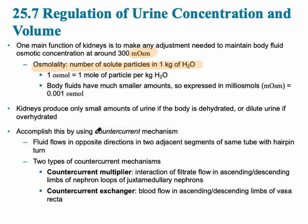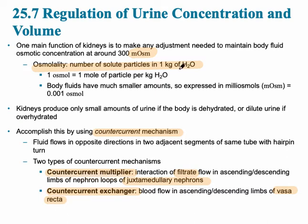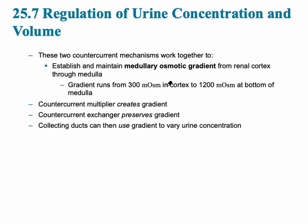There are a couple of ways this occurs, using what's called the countercurrent mechanism, which has two parts. One part is called the countercurrent multiplier — this is the interaction of the filtrate (the liquid in the renal tubule) flowing in the ascending and descending limbs of juxtamedullary nephrons, which have a much longer nephron loop. The other part is the countercurrent exchanger, which involves blood flow in the vasa recta, the specialized capillary bed surrounding a juxtamedullary nephron. The concentration changes from about 300 milliosmols in the cortex to 1,200 milliosmols at the bottom of the medulla at that hairpin turn.